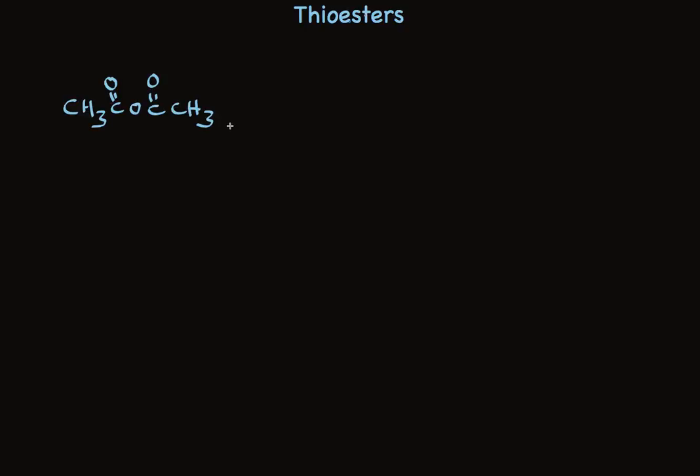An anhydride, such as acetic anhydride, is treated with a thiol. The thiol nucleophile replaces carboxylate to make the thioester.